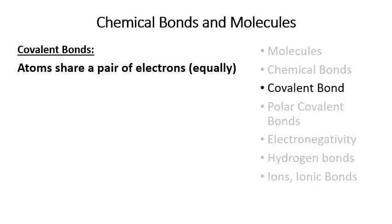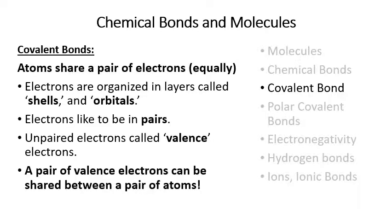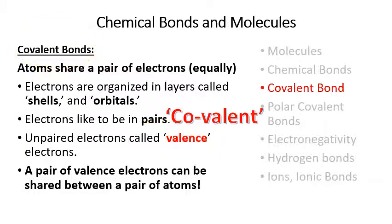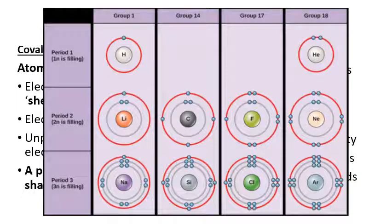In a covalent bond, a pair of atoms equally shares a pair of electrons in the outer valence shell. Electrons are organized in layers called shells or orbitals and like to be in pairs. Unpaired electrons are referred to as valence electrons. If a pair of valence electrons is shared between two atoms, we have a legitimate covalent bond.